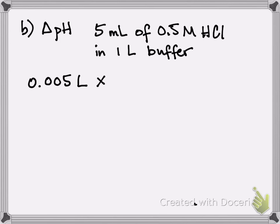And you multiply that by the concentration of your strong acid, 0.5 moles per liter. So this will tell you how many moles are in your 5 mils that you added. And when you do that math, you end up getting 0.0025 moles.